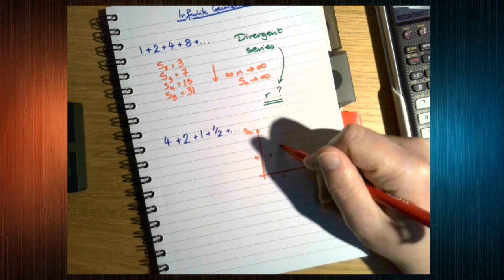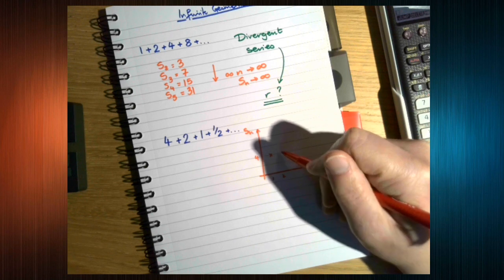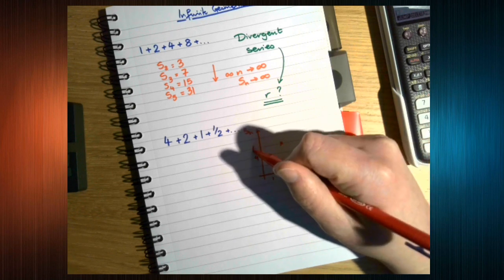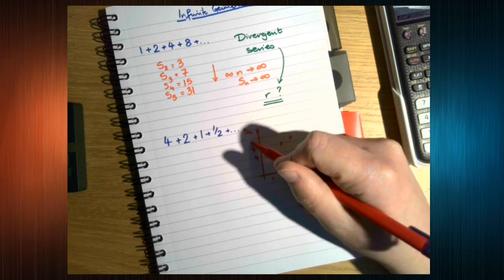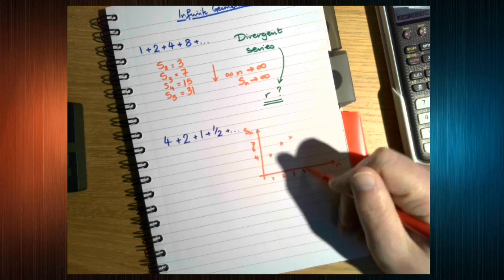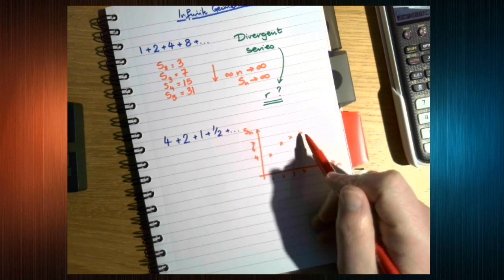When N is 2, the sum is 6. When N is 3, the sum is 7. When N is 4, the sum is 7.5, and so on.